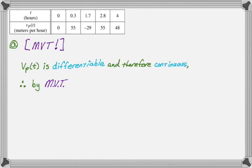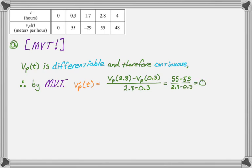So by mean value theorem, vP(t) equals vP(2.8) minus vP(0.3) over 2.8 minus 0.3. This is a calculator question, but if we fill in the values from the table: 55 minus 55 over 2.8 minus 0.3, that's definitely zero for some t where t is an element of 0.3 to 2.8. That's part A, a very expected problem.